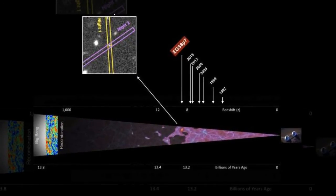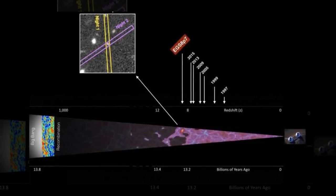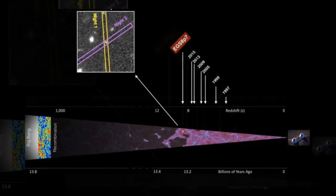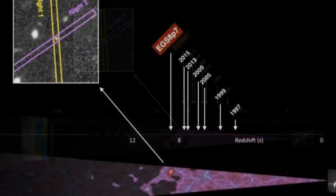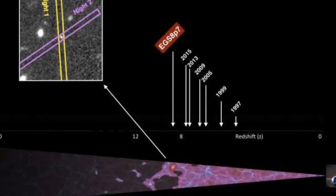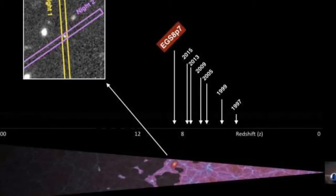The result gives new insight into cosmic ionization, the process by which dark clouds of hydrogen were split into their constituent protons and electrons by the first generation of galaxies.